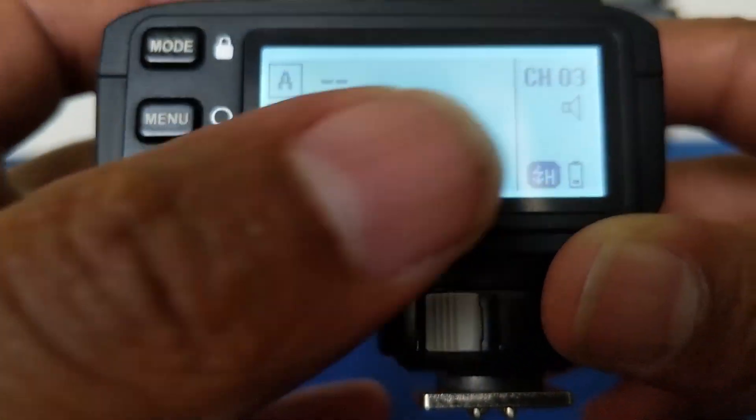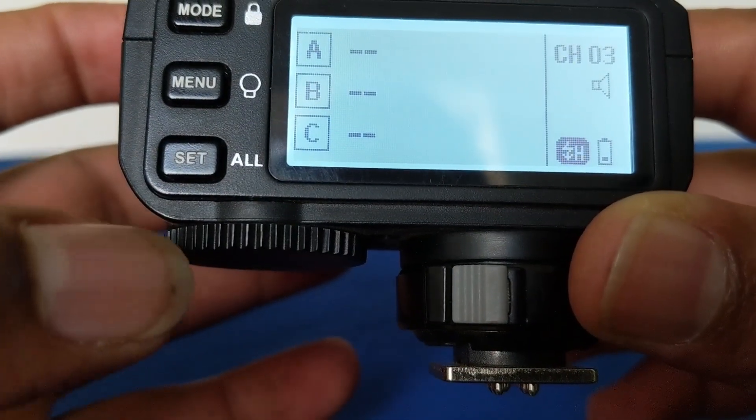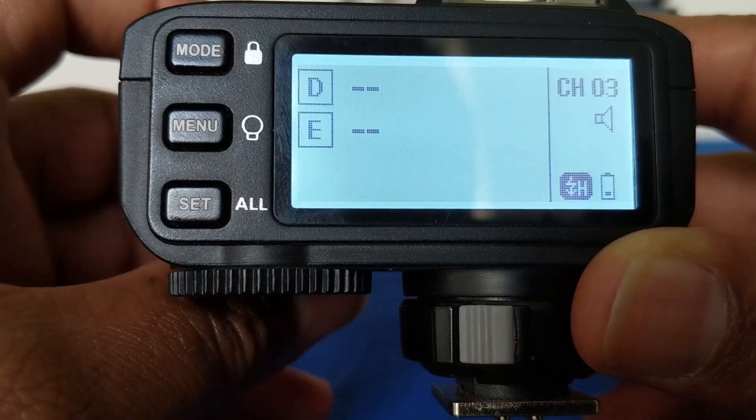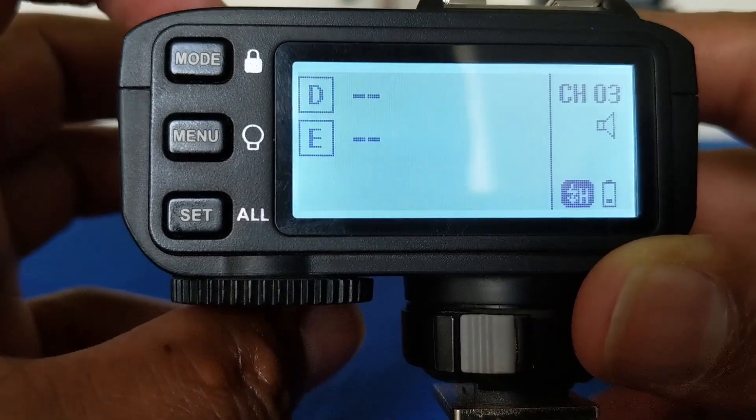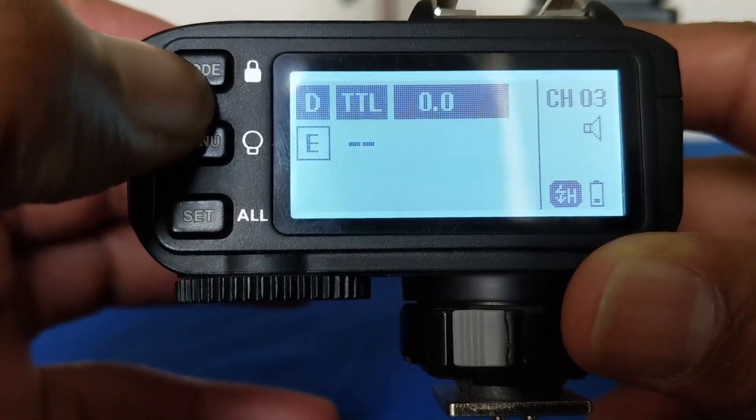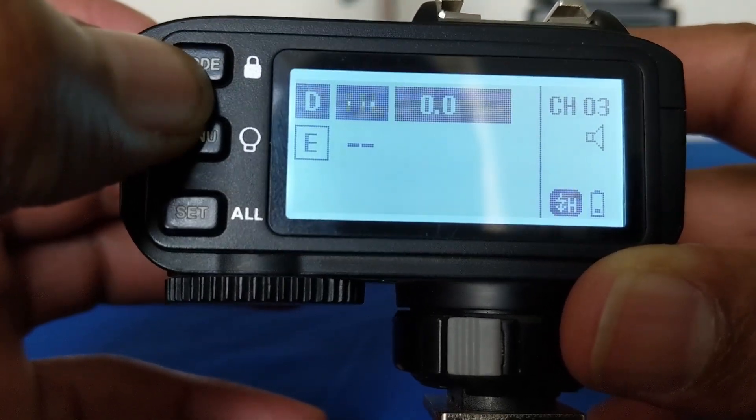And you have to look at this icon here, this H icon which shows high-speed sync. And when you select group C, now you can have the TTL, M, and OFF.